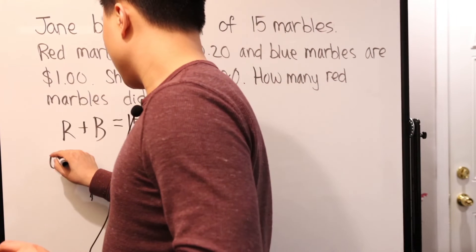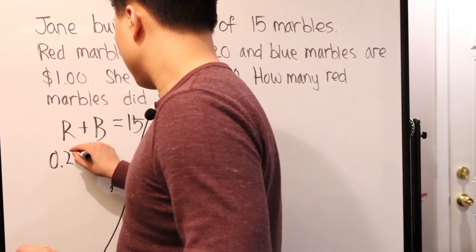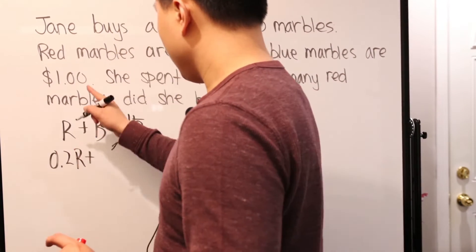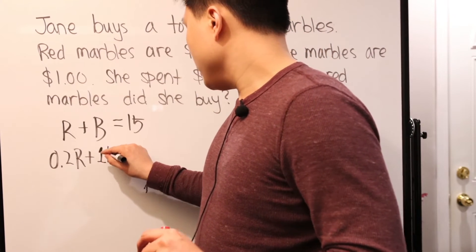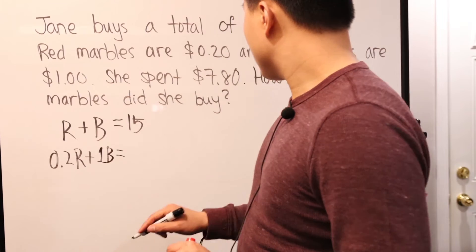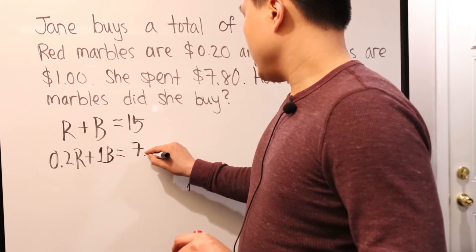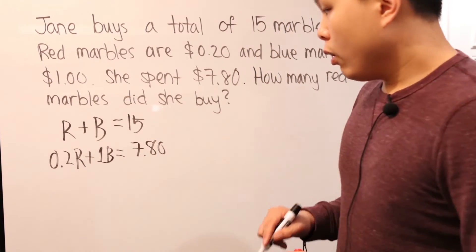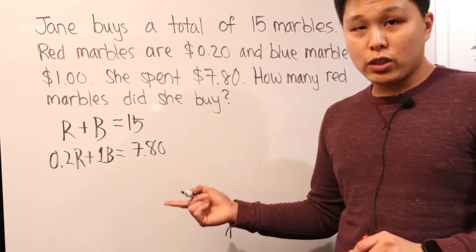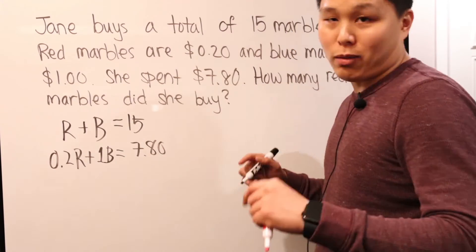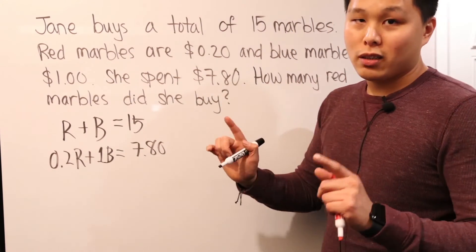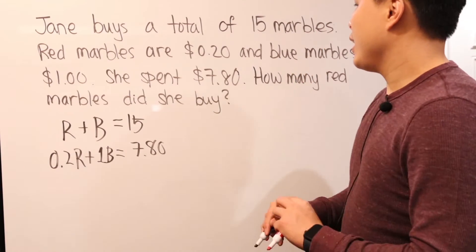And we know that each marble is worth, well, the red one is going to be 20 cents. So 0.2R plus, and then each of the blue marble is $1. It's going to be one B or just B. And if you add them all together, it should be $7.80. So 7.80, which is great. I don't really want to solve it that way just because, I mean, it's decimal as well. And then we got to do all the multiplication and all that stuff. But if we just reason this out, we can actually solve it without doing that.